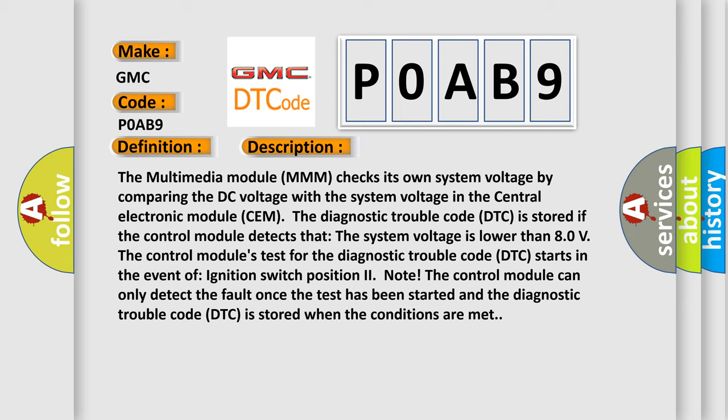The diagnostic trouble code DTC is stored if the control module detects that the system voltage is lower than 80 volts. The control module's test for the diagnostic trouble code DTC starts in the event of ignition switch position to note. The control module can only detect the fault once the test has been started and the diagnostic trouble code DTC is stored when the conditions are met.